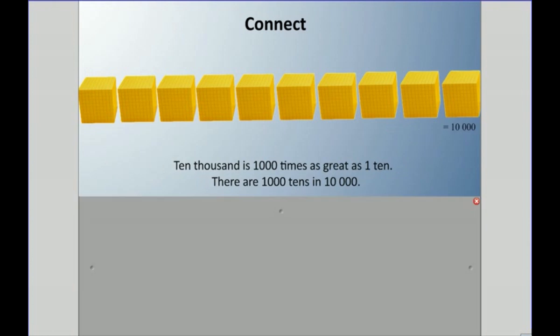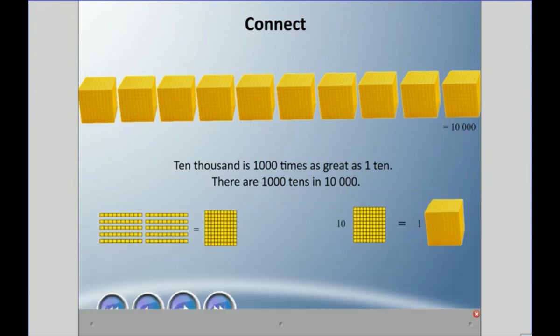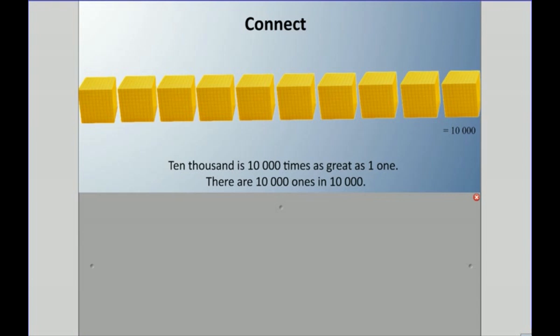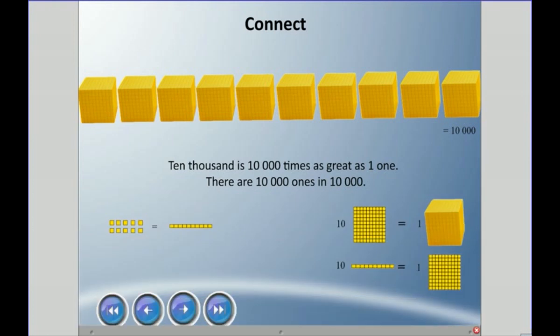Let's talk about 10,000 in terms of tens. 10,000 is 1,000 times greater than 10, and there are 1,000 tens in 10,000. Remember, 10 of these go into one of those, and 10 of those go into the thousand blocks. Now let's talk about ones. 10,000 is 10,000 times as great as one little cube. There are 10,000 ones in 10,000. Remember, 10 ones make 1 ten, 10 tens make 1 hundred, 10 hundreds make 1 thousand, and 10 thousands make 10,000.